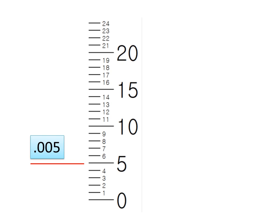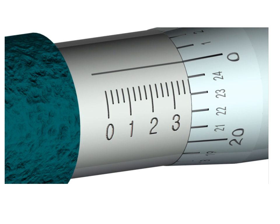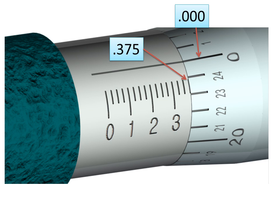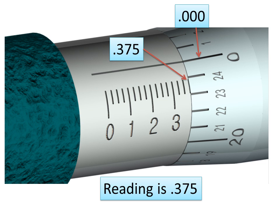Seventeen is seventeen thousandths, 0.017. Now let's look at a reading. This mark tells us that we're at 0.3, and then 0.325, 0.350, and 0.375. So that mark represents 0.375. The reading from the thimble scale is zero, so we don't add anything to the 0.375, and the reading is 0.375.